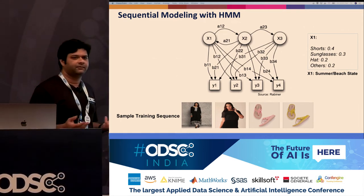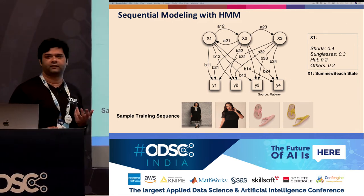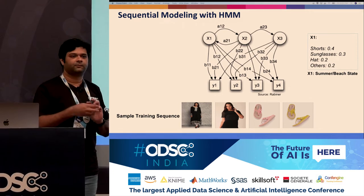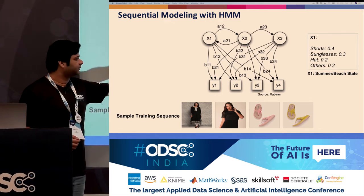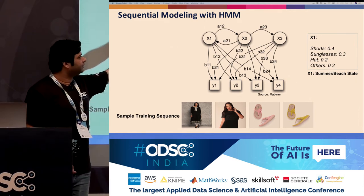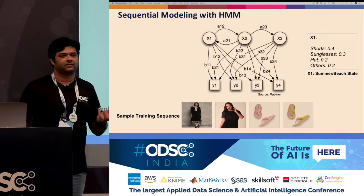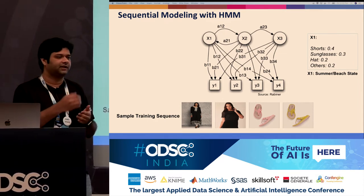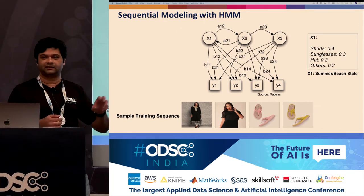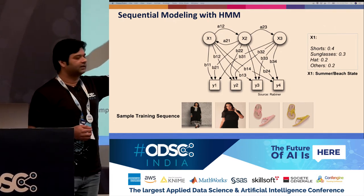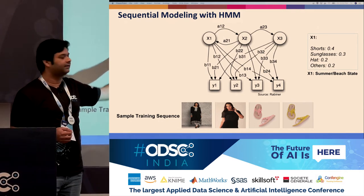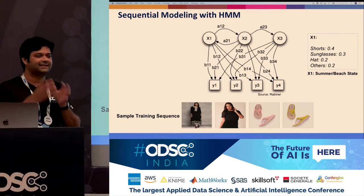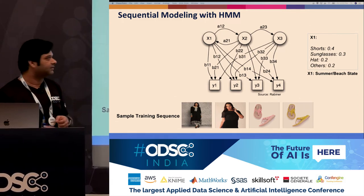A traditional machine learning approach would be to use an HMM. We have hidden states X1, X2, X3, and from each hidden state there are probabilities of observing actual observation states — the sessions themselves. One interesting thing we observed: the emission probabilities for one hidden state were shorts, sunglasses, hats, and others — suggesting the user is probably looking for something for a beach or summer state. If I can identify the user is in that state, I can predict accordingly.